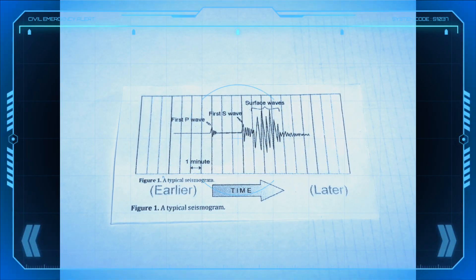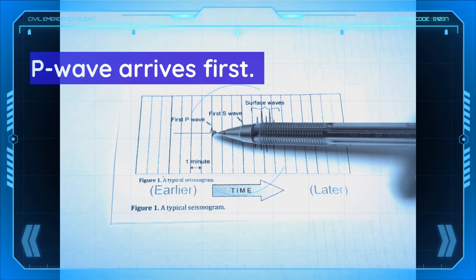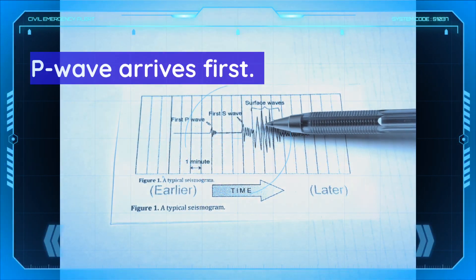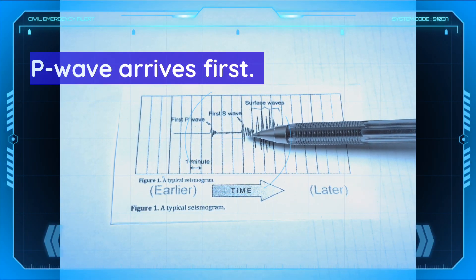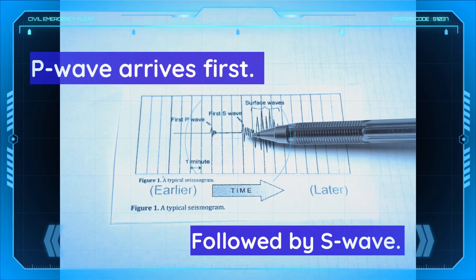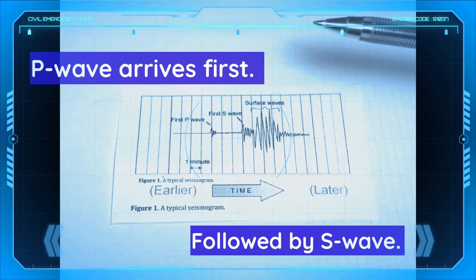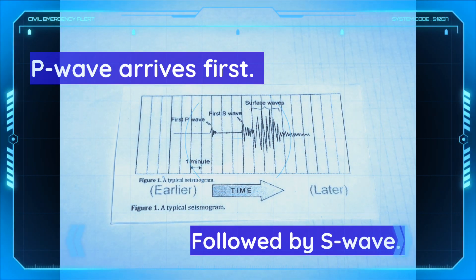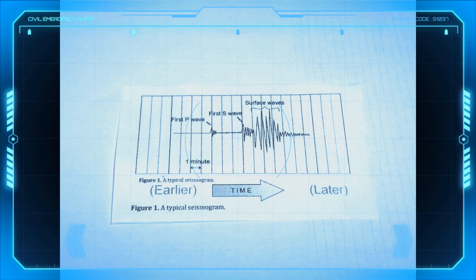This is a typical seismogram. It shows that the P wave arrives first, followed by the S wave after a few minutes. The difference in the arrival times of the P wave and S wave is used to determine the distance of the epicenter from the location of the seismograph.